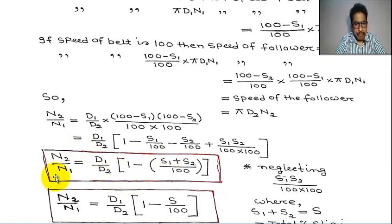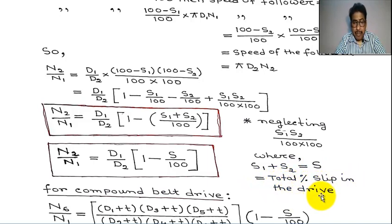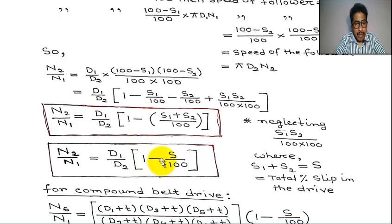We remember this formula. Now, if S1 plus S2 equals S, the total percentage slip in the drive, then the formula simplifies to: N2 / N1 = (D1 / D2) × (1 minus S/100). We remember this formula.